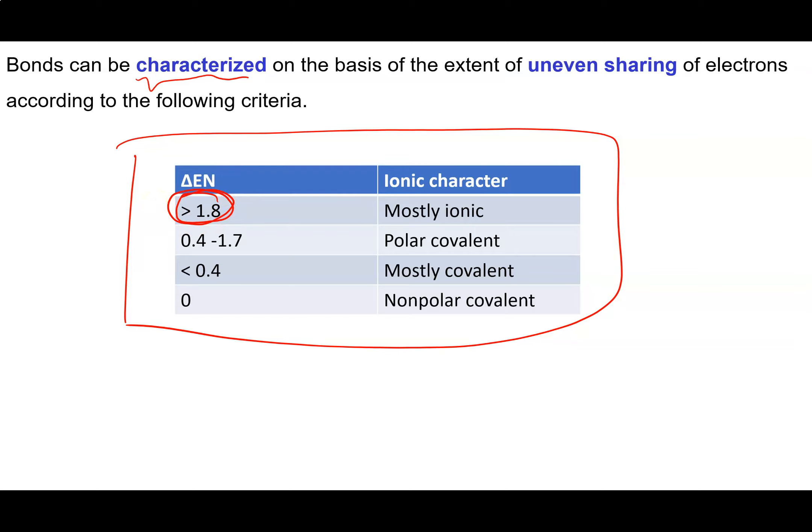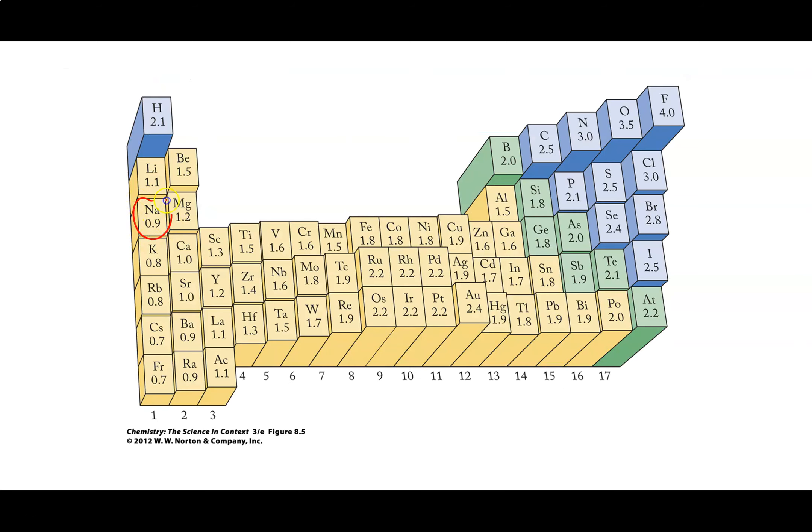And the more electronegative atom is just stealing those electrons from the less electronegative atom. So this is what we're going to see between metals and non-metals. And if I go back to that table there and we look at something like sodium with chlorine or even sodium with oxygen we see these very large differences in electronegativity.